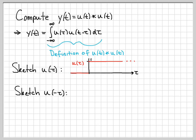Now, u of minus tau is not a signal we need directly for the convolution integrand, but it's the first thing you usually sketch when trying to sketch u of t minus tau. u of minus tau is just u of tau flipped on the time axis — it's a unit step that is on for all negative time and turns off at time 0. This is u of minus tau.